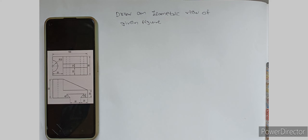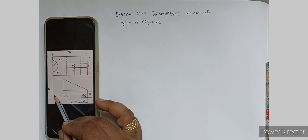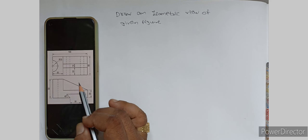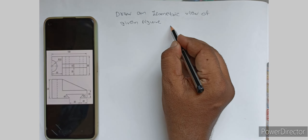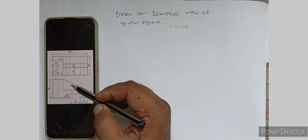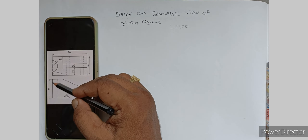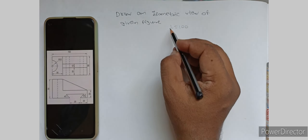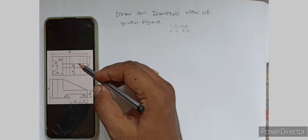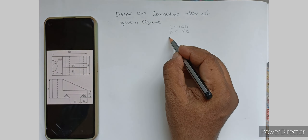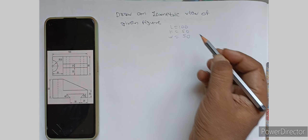First of all, you have to calculate the length, width, and height. The length of the object — we can see in the plan and in the elevation — length is 100 mm, so L equals 100. Height we can see in the elevation is 50 mm, so H equals 50 mm. Width we can see in the plan is 50 mm, so W equals 50 mm.